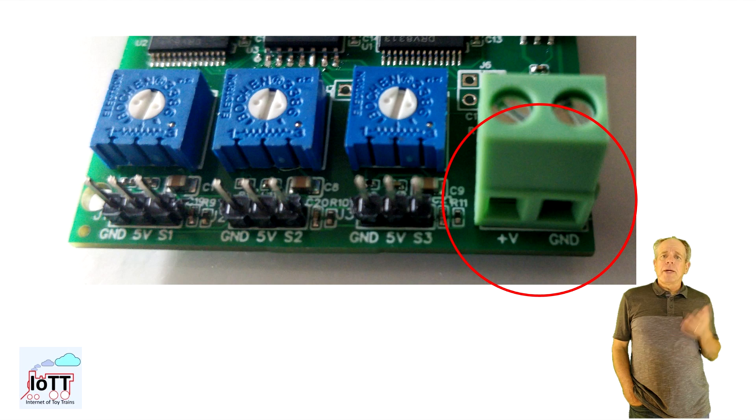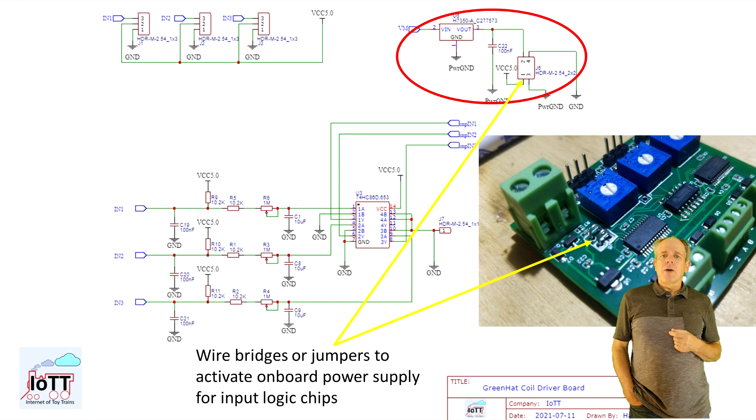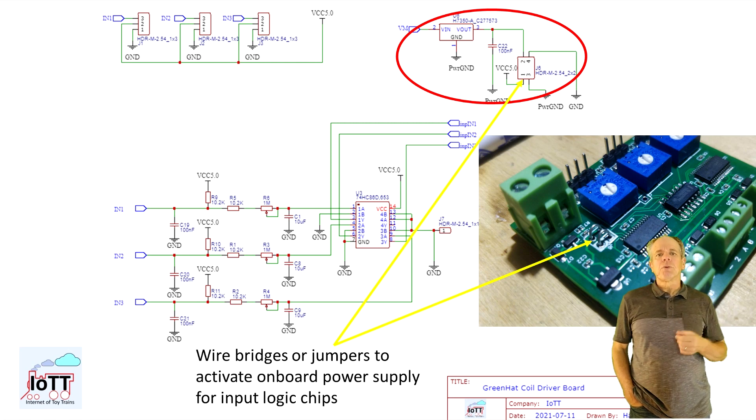One last element worth mentioning is the onboard power regulator, which generates an optional 5V supply for the logic chips from the switch voltage. To activate it, you simply add bridges for ground and 5V and you now can operate the switch by connecting and releasing the input signal to ground. No external 5V power needed in that case.